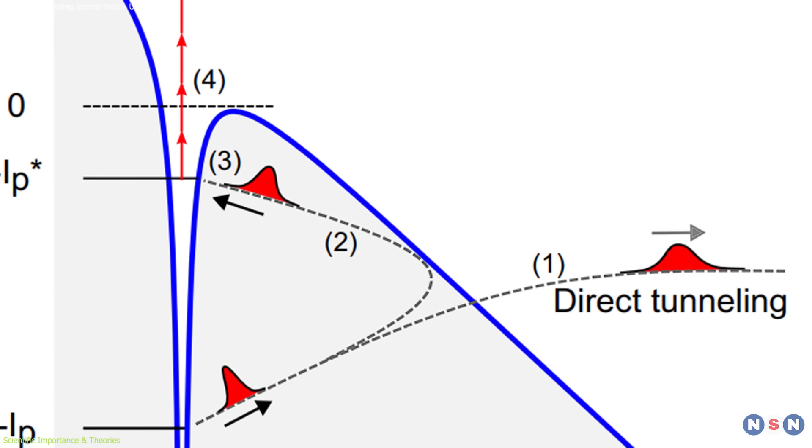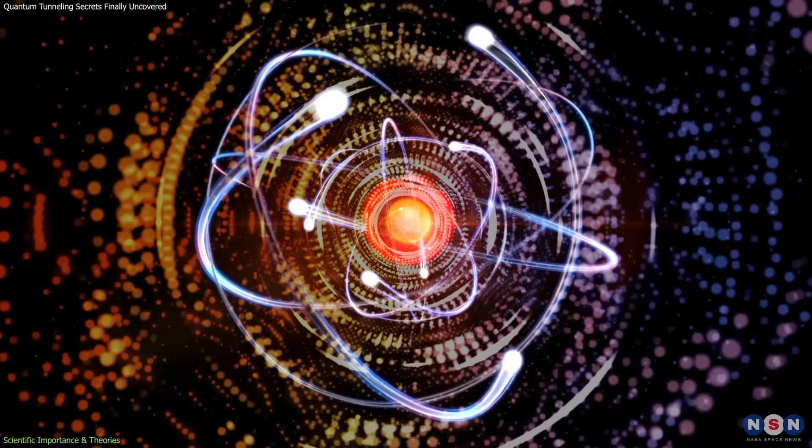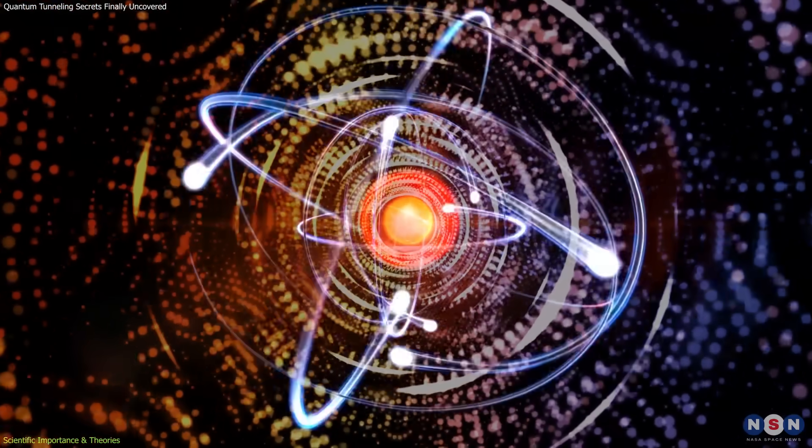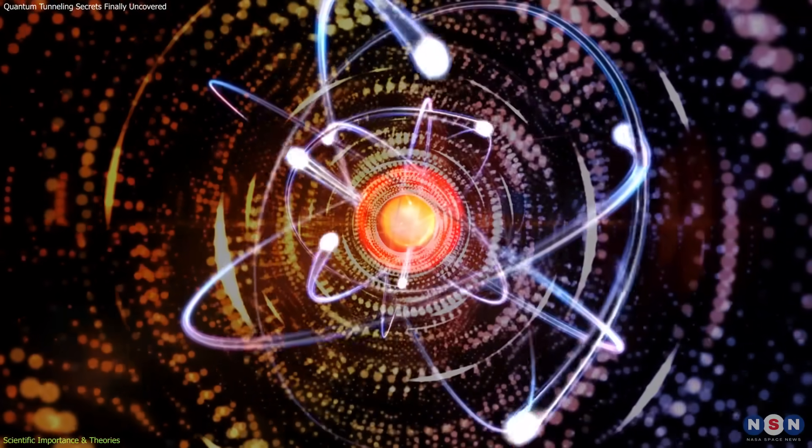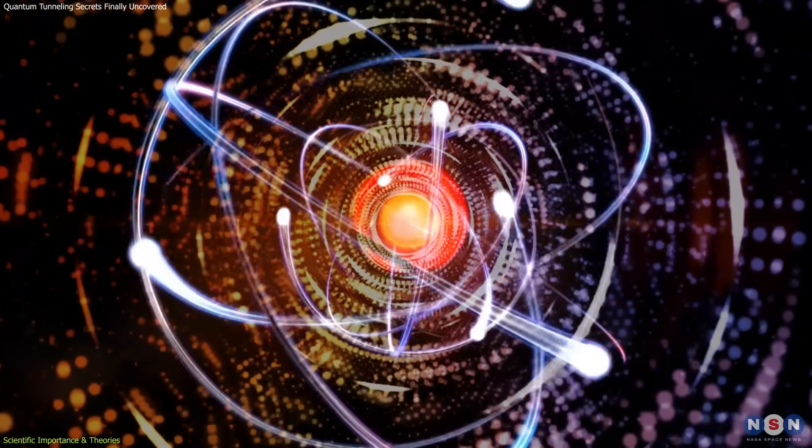Under-the-barrier recollision upends that picture, revealing that electrons actively engage with the nucleus while still under the barrier, gaining energy in the process.